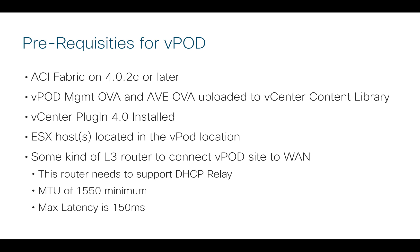In order to connect the VPOD site back to your central data center where ACI is running, you need some kind of generic layer 3 router. That router can be from any vendor. It needs to support a couple of basic things: DHCP relay so we can discover the VPOD devices and register them to the fabric, and a slightly higher MTU — minimum 1550, since VXLAN adds 50 extra bytes. I'd recommend 1600 as a better minimum, or full jumbo frames of 9000-plus if you can. Maximum latency between the VPOD and the main site is 150 milliseconds, which covers quite a far distance.